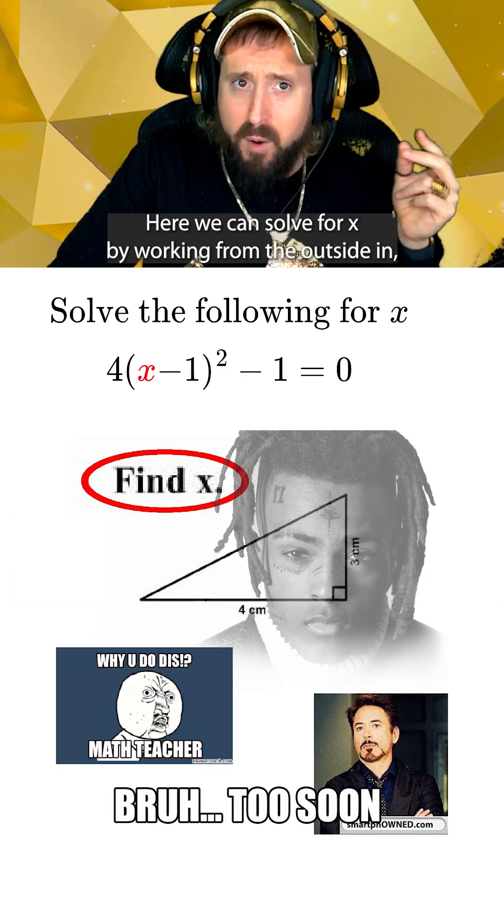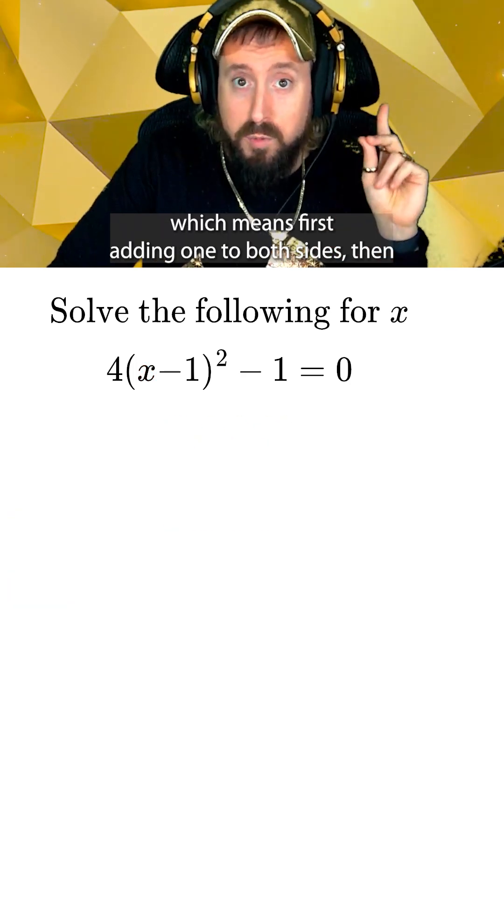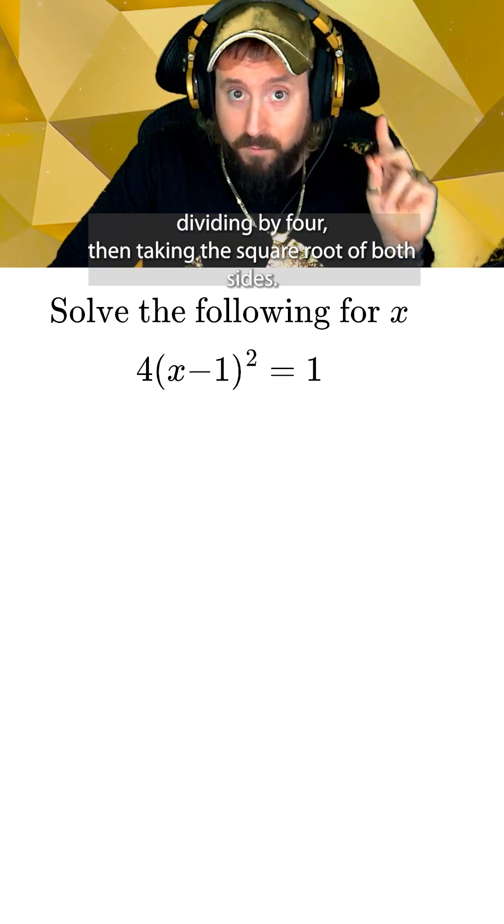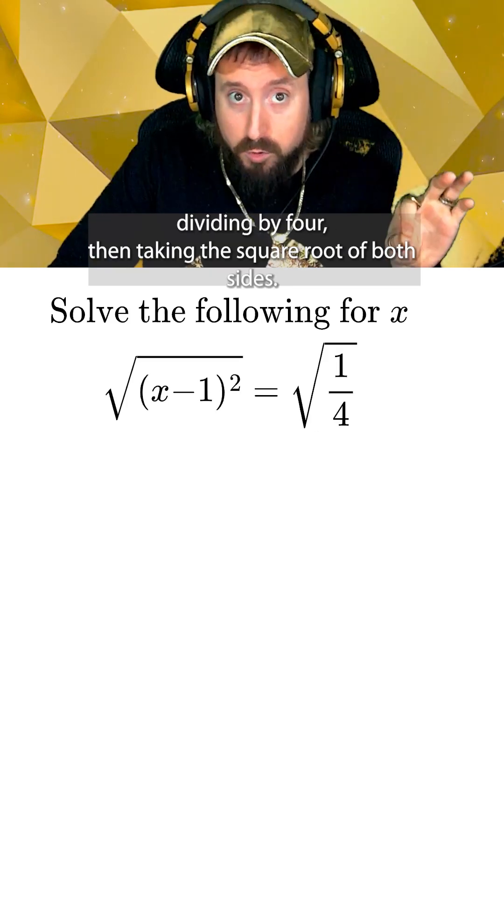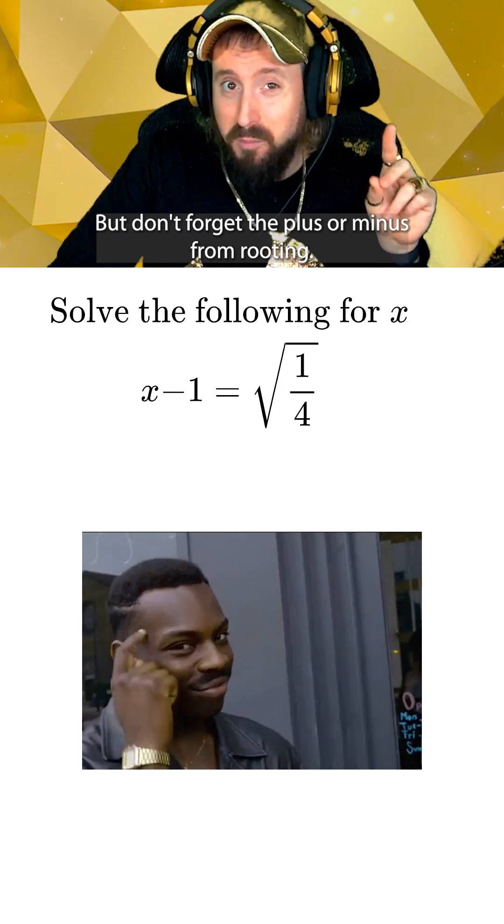Here we can solve for x by working from the outside in, which means first adding 1 to both sides, then dividing by 4, then taking the square root of both sides. But don't forget the plus or minus from rooting.